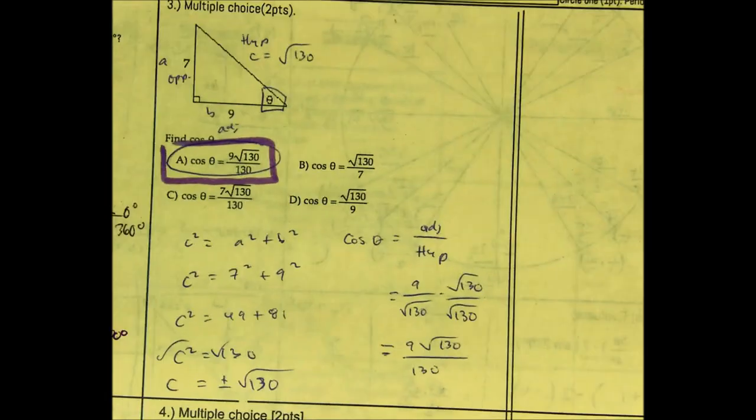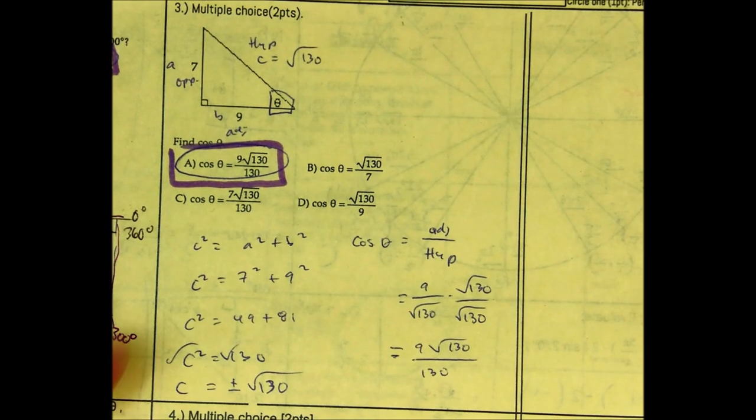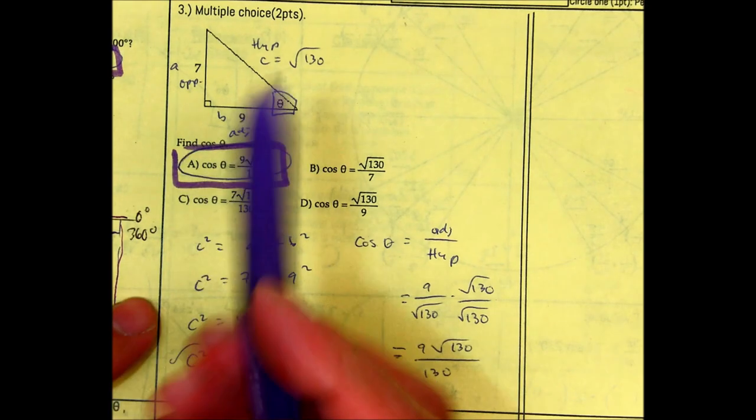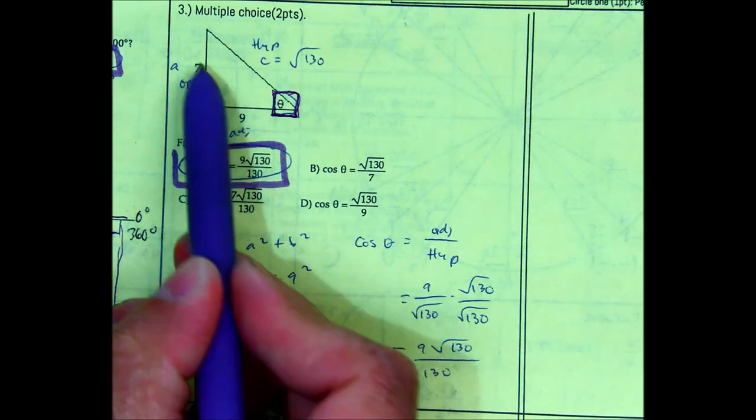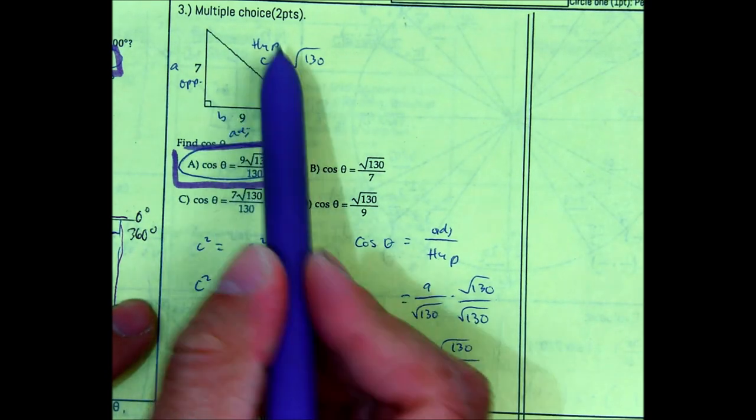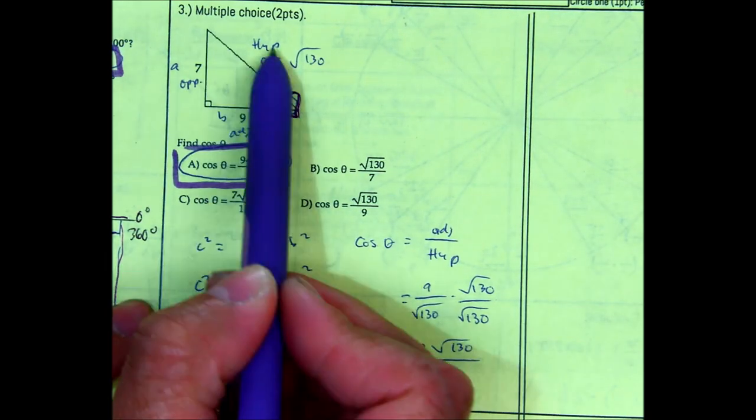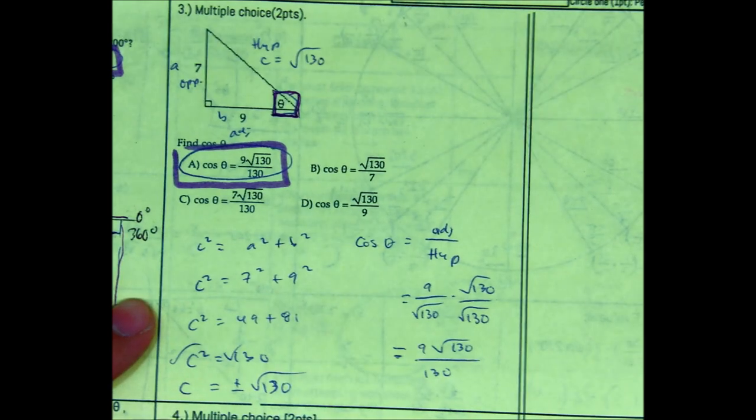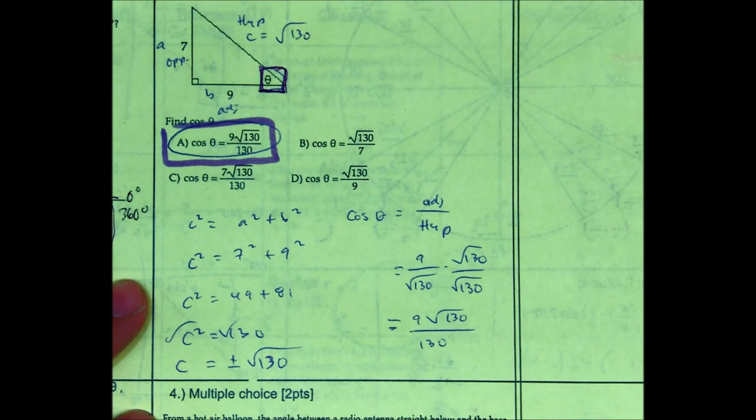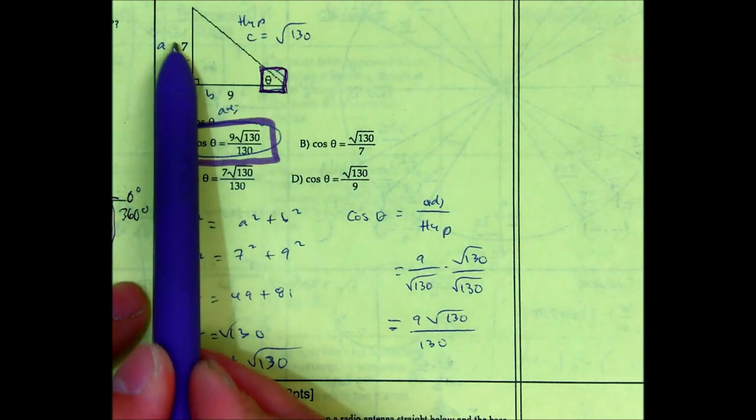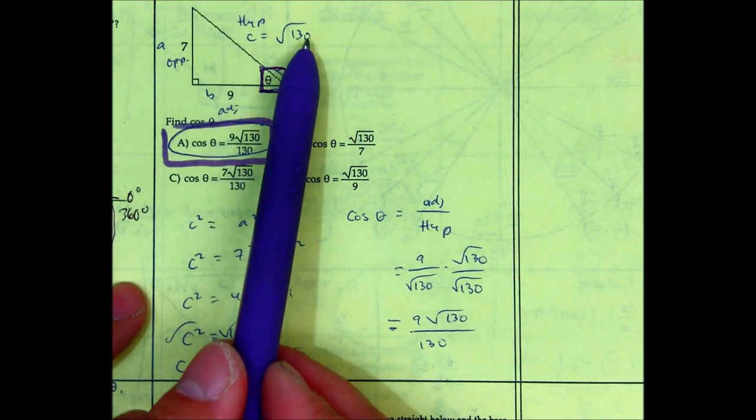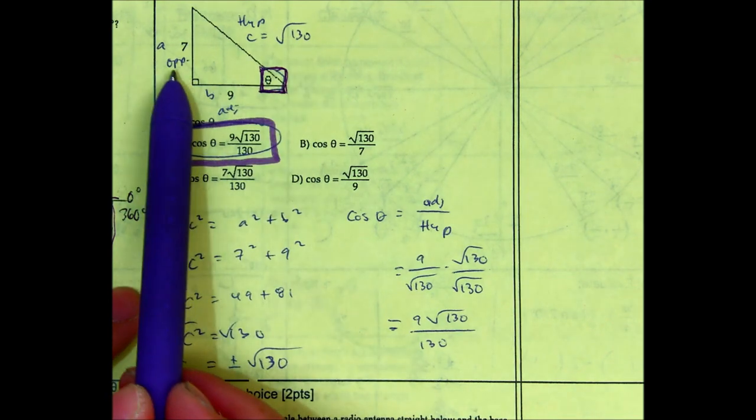Question number 3. Multiple choice. Find cosine of theta. Here is theta. This is your starting position. You have the opposite. You have the adjacent. You are essentially missing this one, which is the hypotenuse. To solve for the hypotenuse, you can use Pythagorean theorem. Pythagorean theorem is used when you have two sides of the triangle and you are trying to find the third side. So, I called A7.